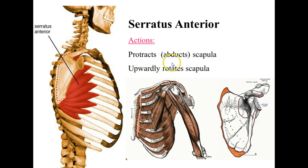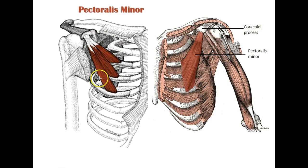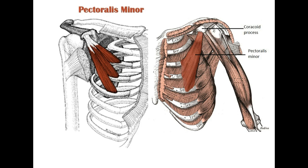Our last muscle for today is called the pectoralis minor. On our picture here, the pectoralis major has been removed or cut away — it was attaching all along here. Pectoralis minor is underneath — it is deep to pectoralis major and it's much, much smaller. It does generally have a sort of little serrated edge to it. The insertion is the coracoid process of the scapula, not the acromion that touches the clavicle — the coracoid process.